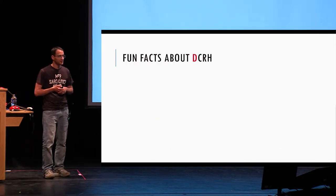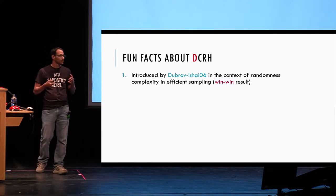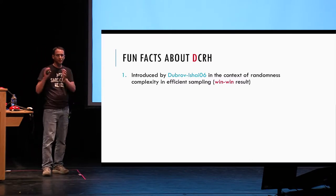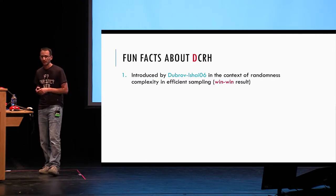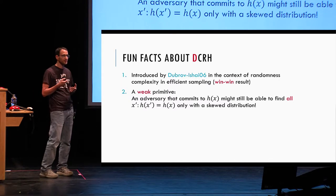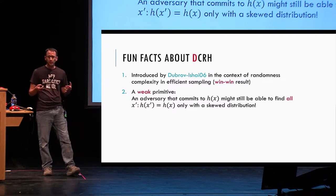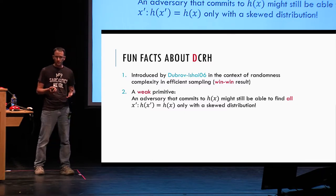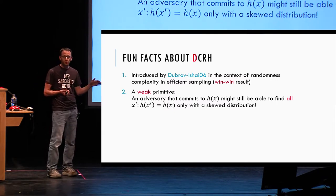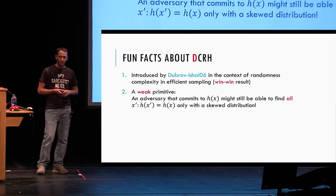A few fun facts about distributional collision resistant hash, DCRH. They were introduced by Dubrov and Ishai in the context of efficient sampling — they had a win-win result that either DCRH exists or something regarding the complexity of efficient sampling holds. These DCRH functions are a very weak primitive: the adversary might be able to find all collisions under H and still not break security, as long as he finds the collision in some skewed distribution rather than the uniform one. The security only says he cannot find a random collision according to the uniform distribution.